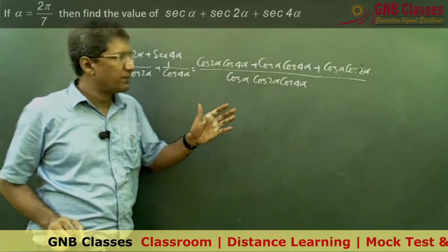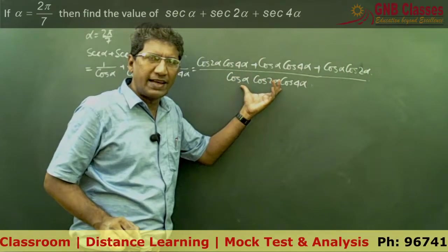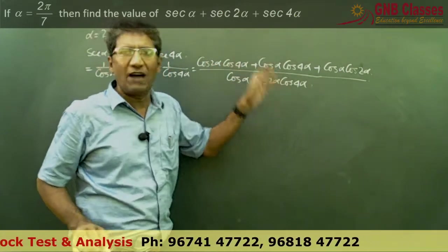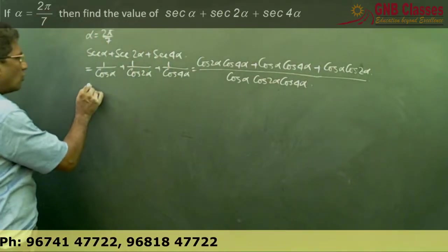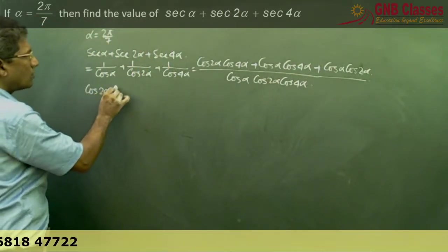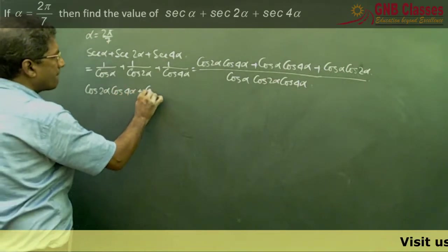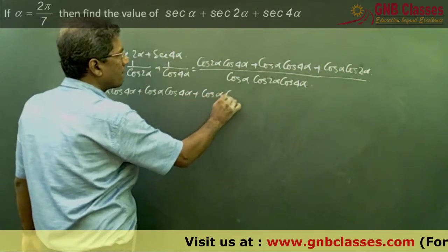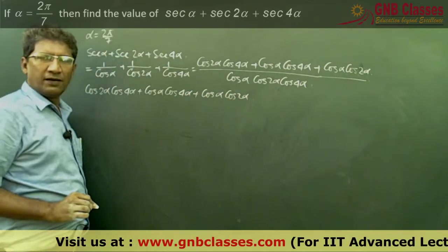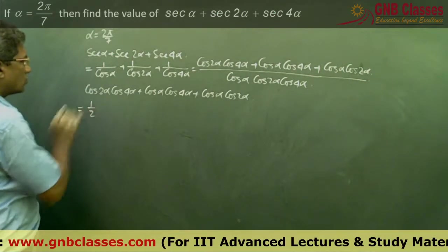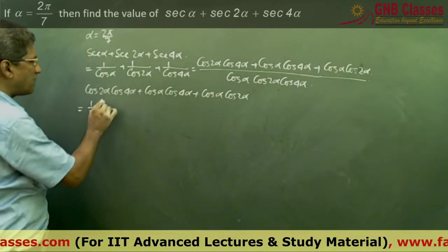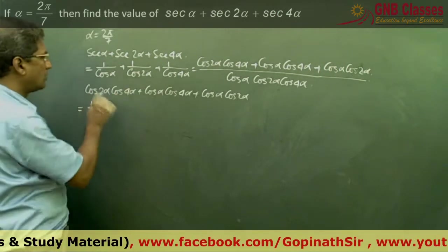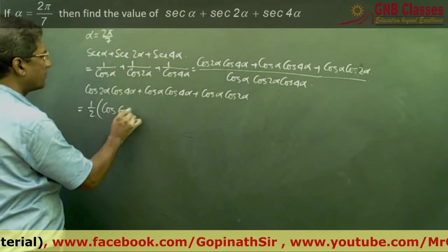In the numerator we get cos 2α · cos 4α + cos α · cos 4α + cos α · cos 2α. I will solve the problem in two parts: finding the value of the numerator and the denominator separately, then dividing to get the final answer. For the numerator, dividing and multiplying by 2 and applying 2 cos A cos B = cos(A+B) + cos(A−B).